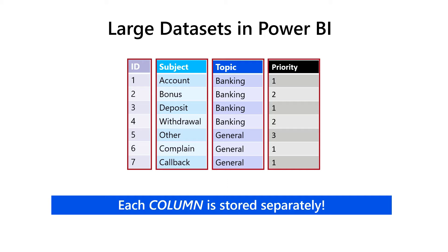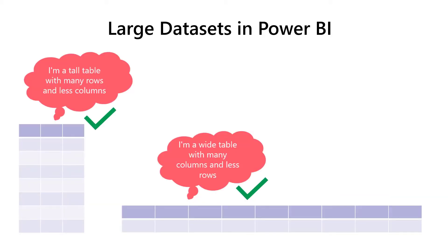Before we answer what is the best approach when designing for performance in Power BI, let's introduce two types of tables most common in data modeling. When you have a huge number of rows — we're talking about millions — but just a few columns, we are talking about a tall table. On the flip side, if a table consists of many columns, it's usually referred to as a wide table. There are two scenarios with wide tables: a table contains a lot of columns but not many rows — dimension tables are a good example — or a table contains a lot of columns but also a huge number of rows, so tall and wide at the same time.